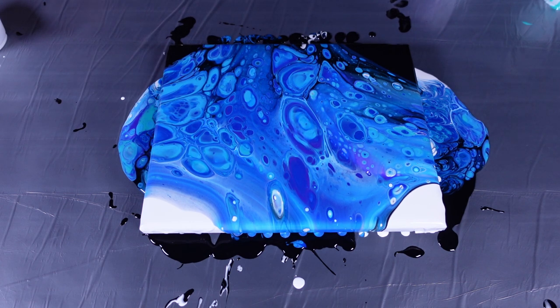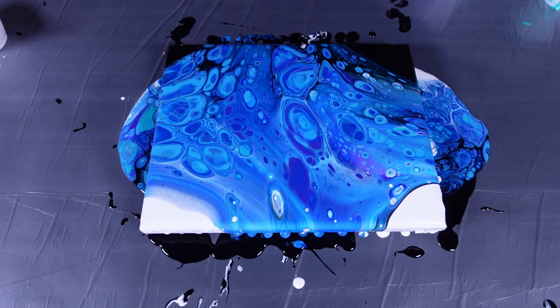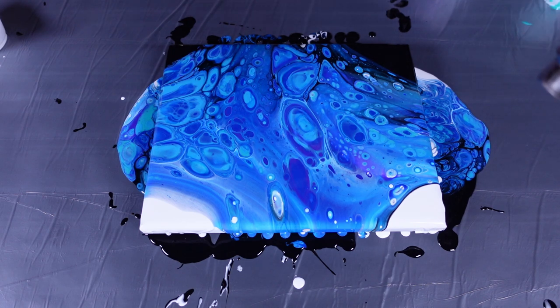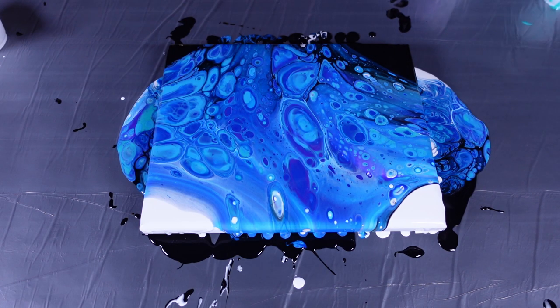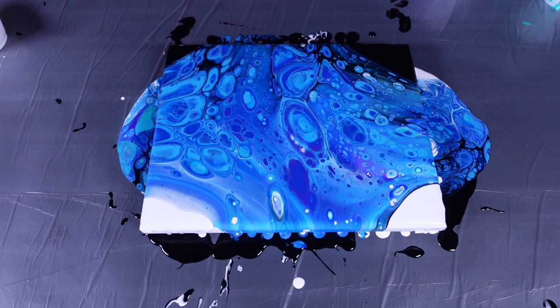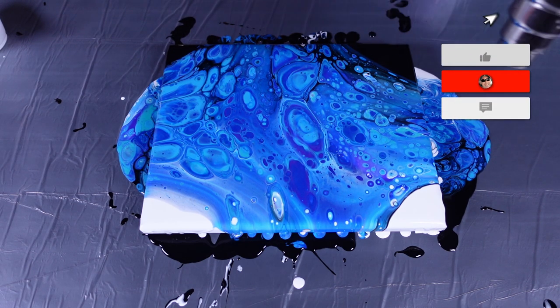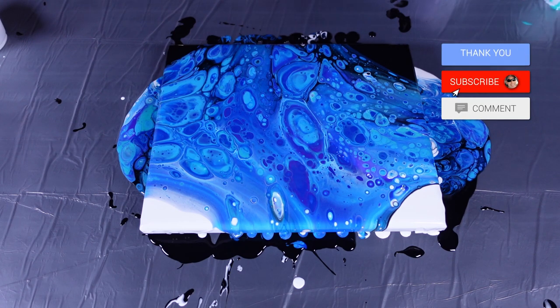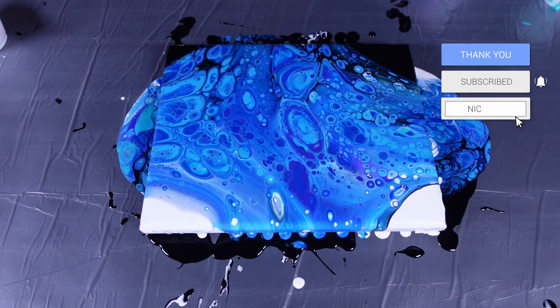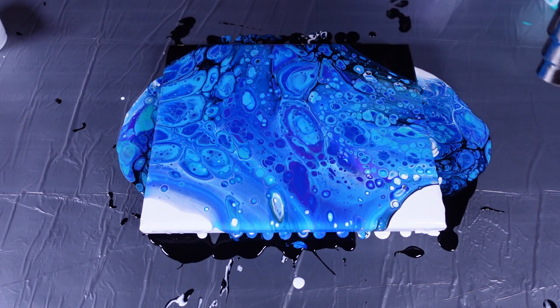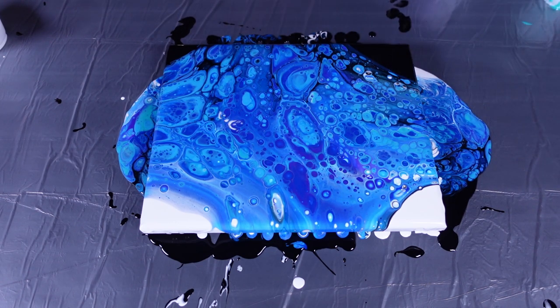Because now that we've gotten some of that paint off the surface, the layer is thinner. So it should be able to make even more cells. Oh, wow. Yes, sir. That's crazy looking right there. What? What is going on?